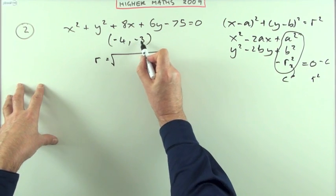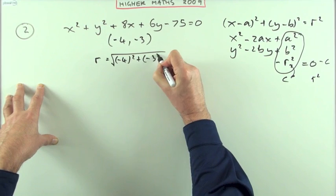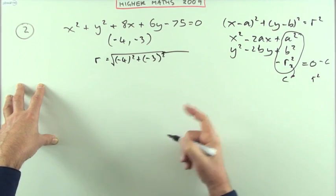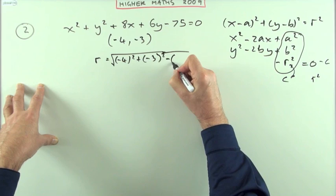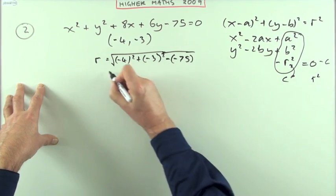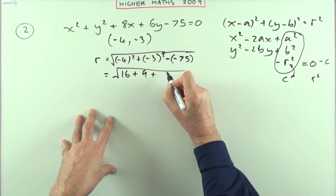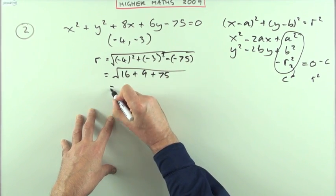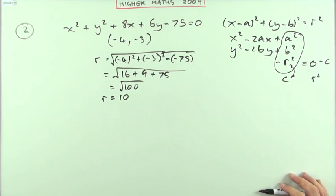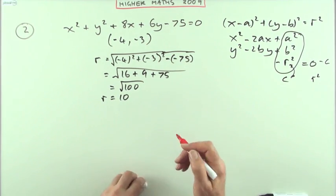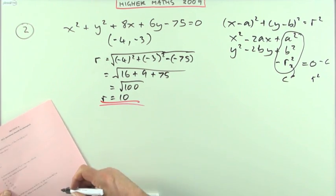So simply get the coordinates of the centre, square them — of course in squaring them it doesn't matter whether positive or negative — then subtract the number at the end. So subtract the negative 75: I've got the square root of 16 and 9 plus 75. That's 25 plus 75, which is 100. The square root of 100 means the radius must be 10, which is answer B.